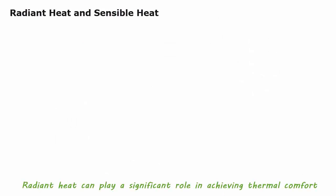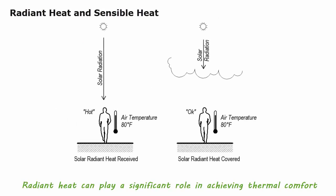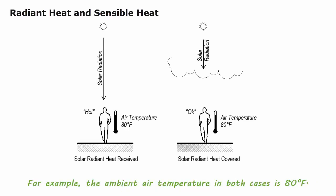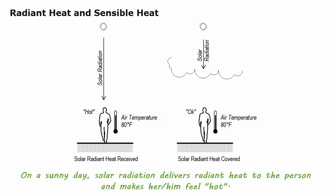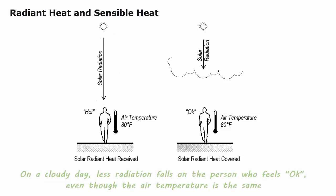Radiant heat can play a significant role in achieving thermal comfort. For example, the ambient air temperature in both cases is 80 degrees F. On a sunny day, solar radiation delivers radiant heat to the person and makes her or him feel hot. On a cloudy day, less radiation falls on the person who feels okay, even though the air temperature is the same.